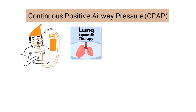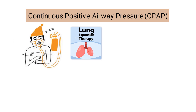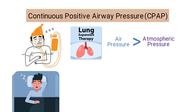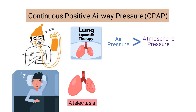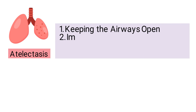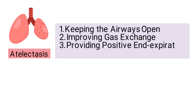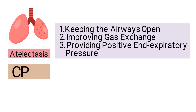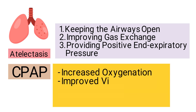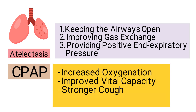CPAP is another type of lung expansion therapy. It's a technique in which a machine delivers air through a mask that covers the nose and mouth, with air pressure adjusted to be slightly higher than atmospheric pressure. This technique is commonly used to treat sleep apnea but can also be used to treat atelectasis. CPAP helps prevent atelectasis by keeping the airways open, improving gas exchange, and providing positive end-expiratory pressure. Other potential outcomes include increased oxygenation, improved vital capacity, a stronger cough, and improved patient comfort.